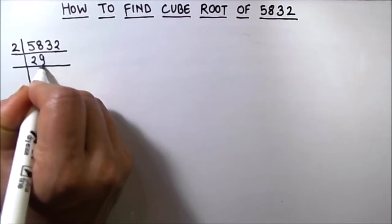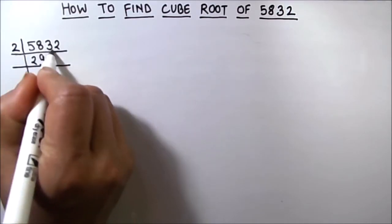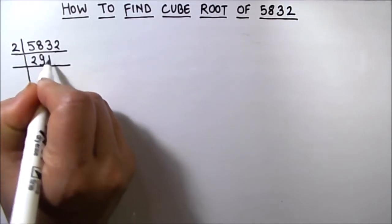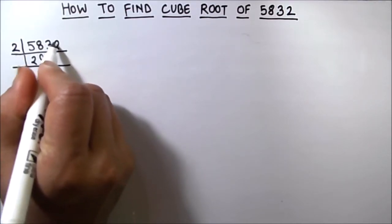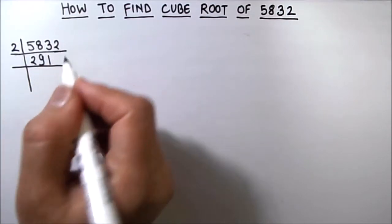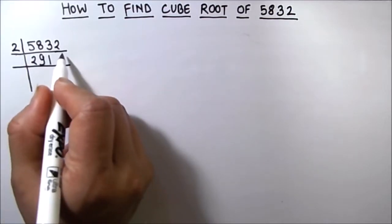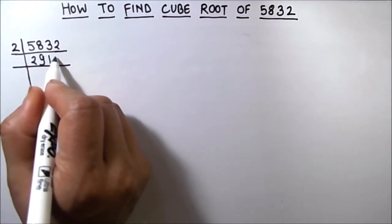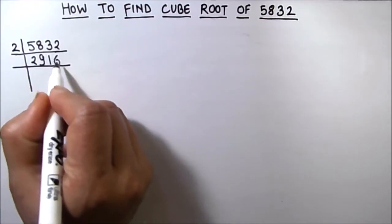So 2 times 9 is 18. 2 times 1 is 2, 1 is carried over to the next digit, so this becomes 12. So 2 times 6 is 12.